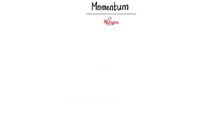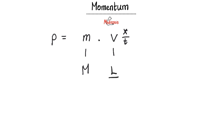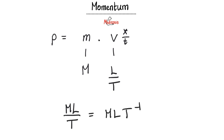Momentum — pause the video and try to do it yourself. Momentum is the mass of the object multiplied by its velocity. Mass has a dimensional formula of M. Velocity is displacement over time, so this is L divided by T. Multiply them together to get ML divided by T, which equals ML T to the power negative 1.